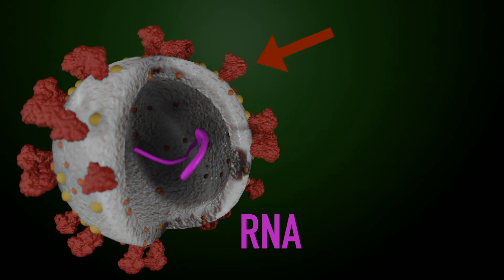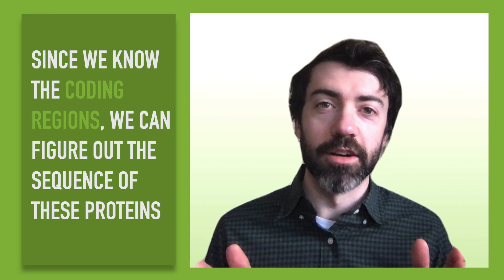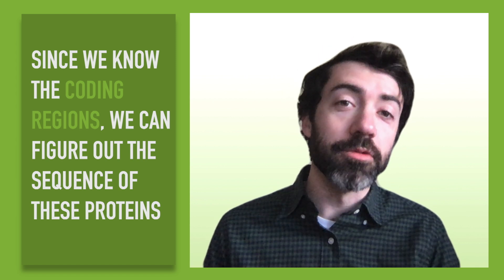By now, you're probably familiar with the spike protein, which is found on the surface of the coronavirus, but the coronavirus also includes other proteins that help it replicate and infect. Since we know the coding regions of the genome, we can figure out the sequence of these proteins.